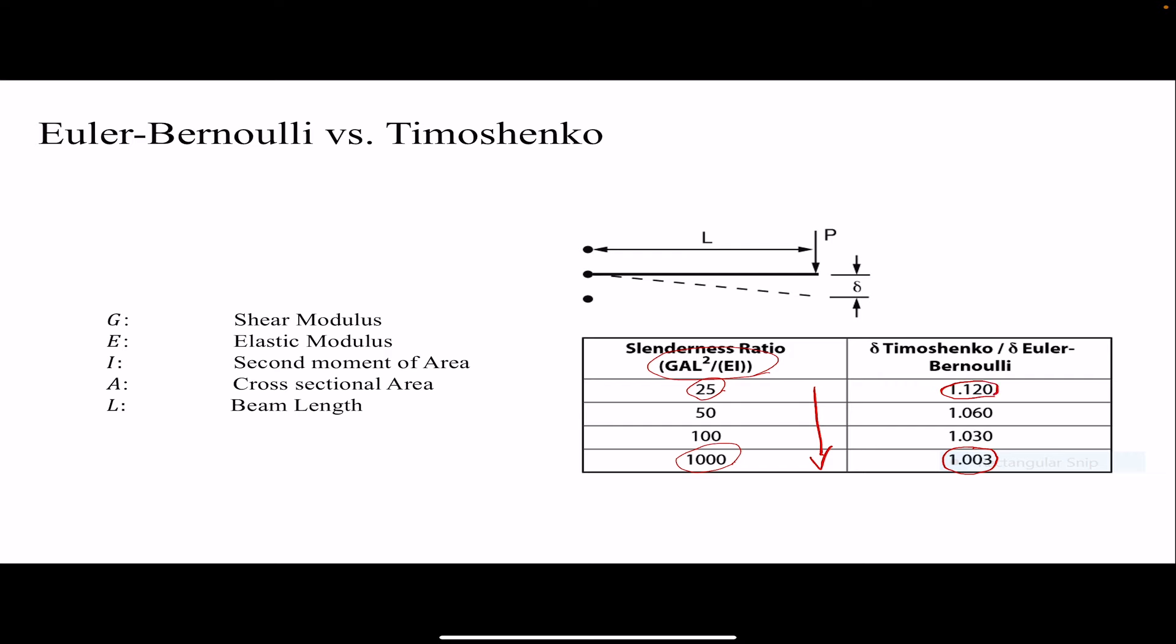And if you go down less than 10, then the error would be higher. So usually for slenderness ratio more than 10, we recommend to use Timoshenko. But in more applications, Euler-Bernoulli would be sufficient.